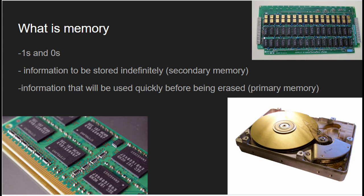The history of RAM. RAM, which stands for random access memory, is a type of computer memory that stores data and instructions temporarily for the CPU to access quickly. The history of RAM dates back to the early days of computing.